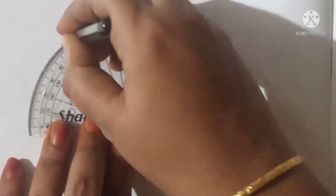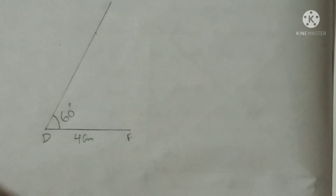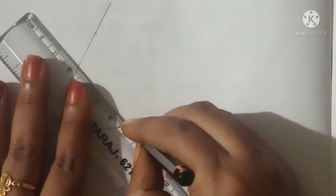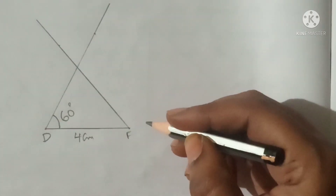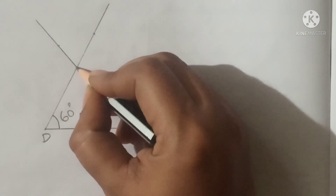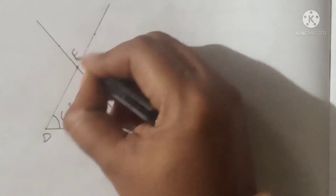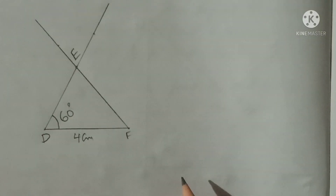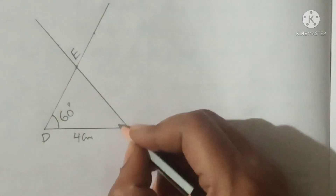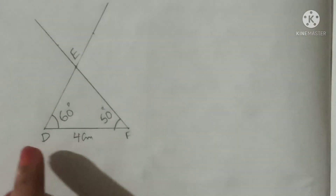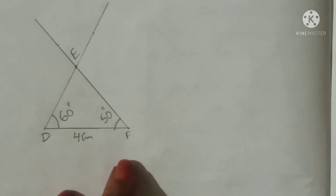This point is called point E. Draw the line in that direction. Here angle F is 50 degrees and that gives us point E. Draw the line and triangle DEF is formed.